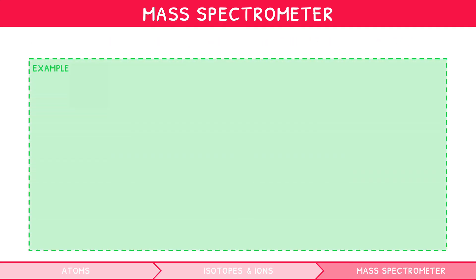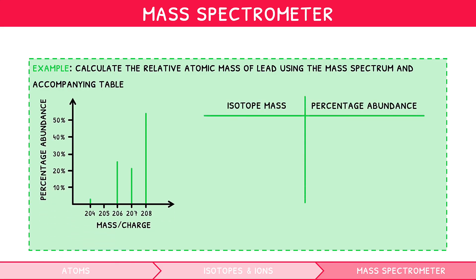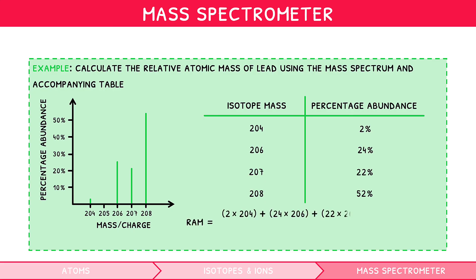Let's look at an example. Calculate the relative atomic mass of lead using the mass spectrum and accompanying table. We can see in the mass spectrum that there are four main isotopes: 204, 206, 207, and 208. The percentage abundance of each isotope is provided in the table to the right. Using the formula, the relative atomic mass for lead is the sum of each isotope's mass multiplied by its percentage abundance, divided by 100. This gives 207.2 grams per mole.